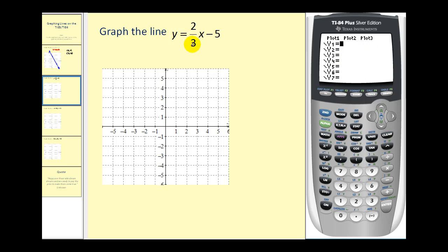We're going to enter in two-thirds in a set of parentheses. So we'll have an open parenthesis, two divided by three, close parenthesis, press x minus five. Now we can graph the line. Press graph. There's the line.